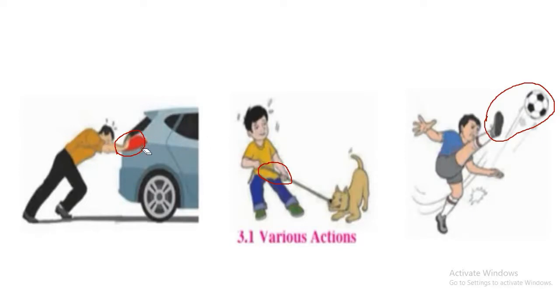In the first figure, when a man pushes the car, he touches the car. That is, there is touch between man and the car. In the second figure, the boy pulls the dog. To pull the dog, he pulls that string. So here also, there is a touch between boy and string. Similarly, in the third figure, when a boy kicks the ball, he touches the ball. So here also, there is a touch between leg of boy and the ball.